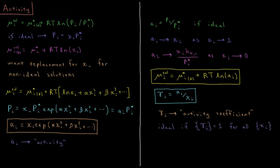If a solution is ideal, the vapor pressure of that component in solution is equal to its mole fraction times the vapor pressure of the pure component. So for ideal solutions, the chemical potential of each component is equal to the chemical potential of a pure liquid of that component, plus RT times the natural log of the mole fraction of that component.